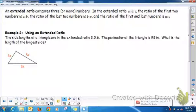An extended ratio compares three or more numbers. In the extended ratio A to B to C, the ratio of the first two numbers is A to B. The ratio of the last two numbers is B to C. And the ratio of the first and the last is A to C.